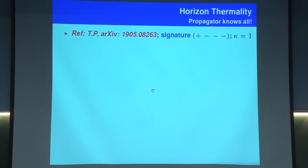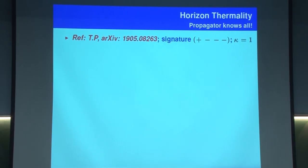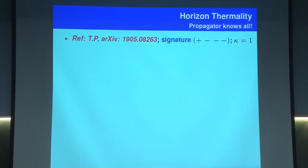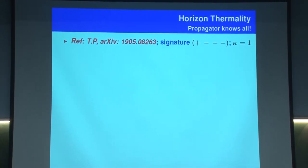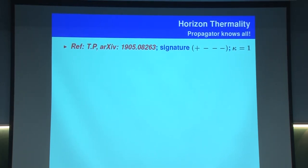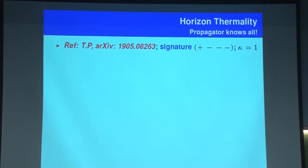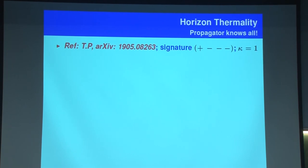I decided to write this up while preparing for these lectures. I am switching signature now to plus minus minus minus because I am going to borrow formulas from my QFT lectures, and in those lectures we use that signature. I am also going to set the acceleration to unity by using suitable units, which means your temperature finally has to appear as 1/(2pi) because beta has to come out as 2pi, and it is g over 2pi which is your temperature.